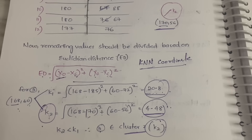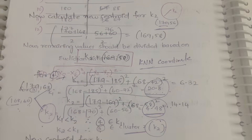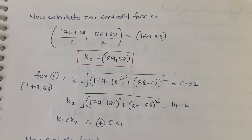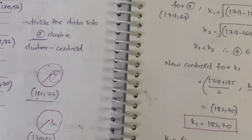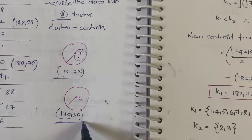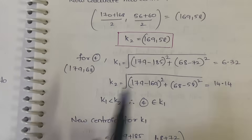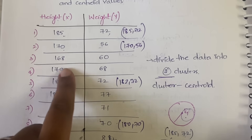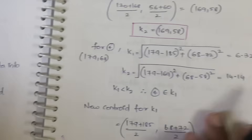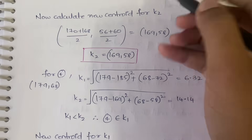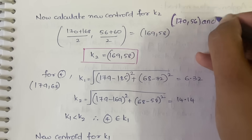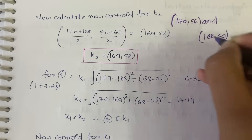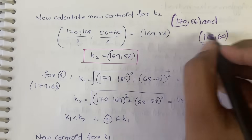Since we moved data point 3 into k2, the centroid of k2 must be updated. The old centroid of k2 was 170 comma 56, and the new data point is 168 comma 60. The new centroid is calculated as: ((170+168)/2, (56+60)/2), giving a new centroid of 169 comma 58 for k2.